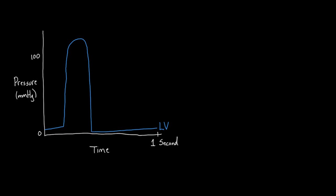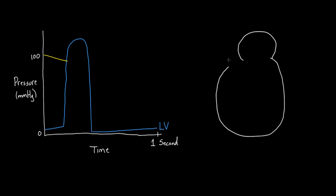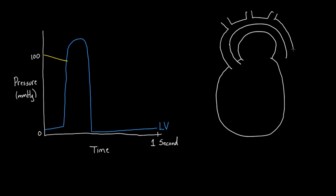Then of course you have the aorta. I'm going to draw what this looks like in the body. You've got the left atrium, then the left ventricle — which is enormous — and then the aorta, a large vessel coming off the left ventricle. The aorta wraps around and goes down, leaving a few branches — classically three branches coming off the arch, which we call the arch of the aorta. There are also two key valves: the mitral valve between the left atrium and left ventricle, and the aortic valve between the left ventricle and the aorta.